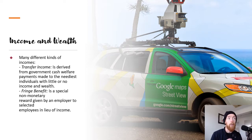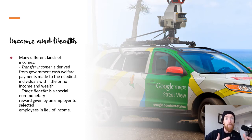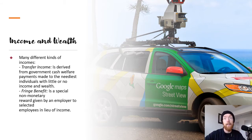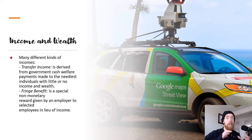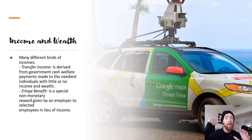Transfer income is derived from government cash welfare payments made for the neediest individuals with little or no income and wealth. Transfer income or welfare spending is the largest portion of government spending in general — it's where the majority of our tax money goes. Especially in the current economy, these are massively important through things like JobSeeker and JobKeeper payments. It's also going to be massively important in Year 12 when you have to learn about government budgetary policy in more detail.